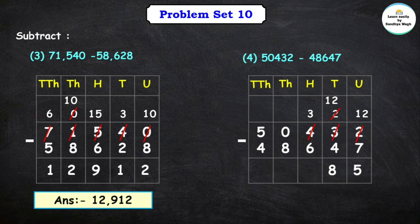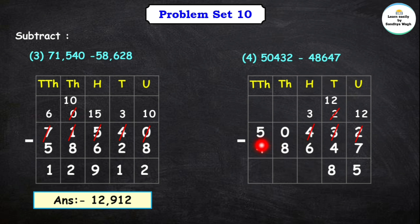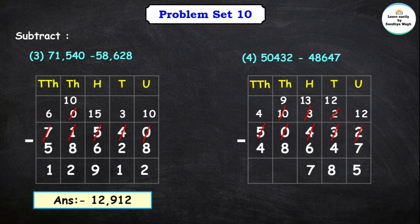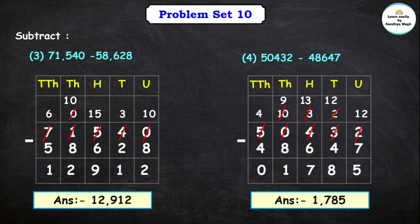In the hundreds place we have 3 and 6; we cannot subtract 6 from 3, so we borrow. The thousands place has 0, so we cannot borrow from there directly. We go to the ten-thousands place which has 5; we borrow 1, making it 4. The thousands place becomes 10; we borrow 1 from that for the hundreds place, leaving 9 in thousands. The hundreds place becomes 13. 13 minus 6 is 7. 9 minus 8 is equal to 1, and 4 minus 4 is equal to 0. So here our final answer is 1,785.